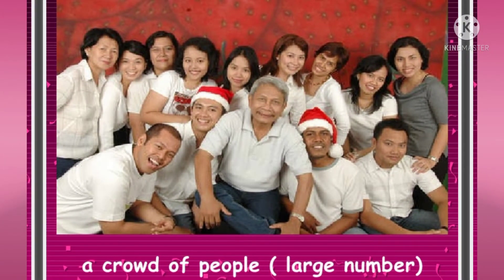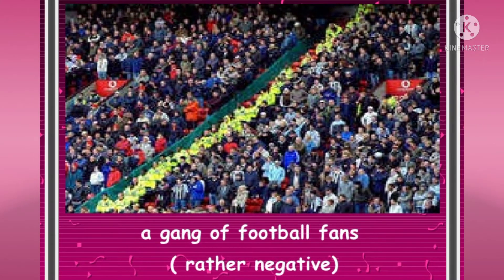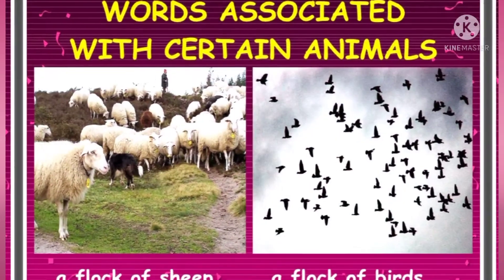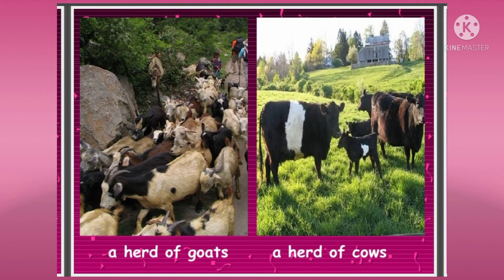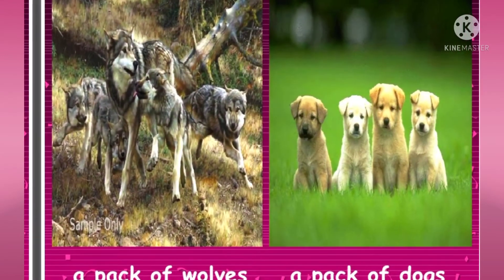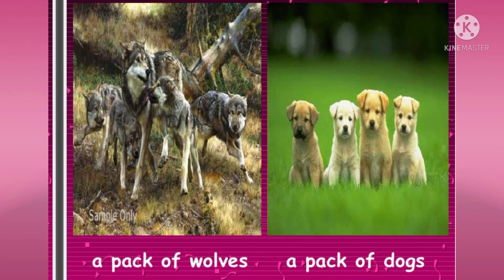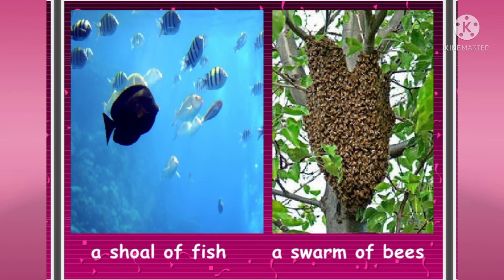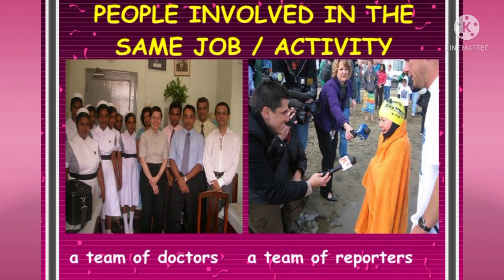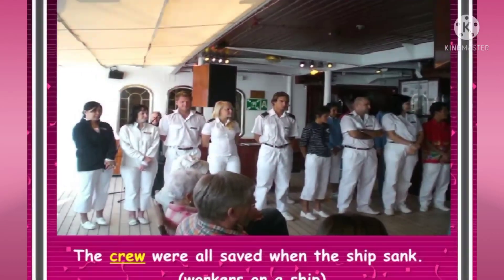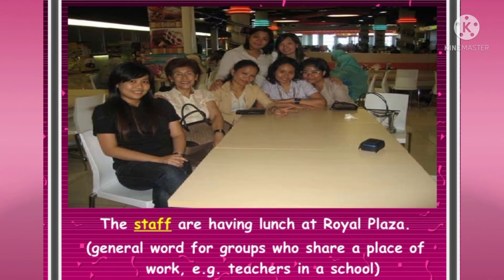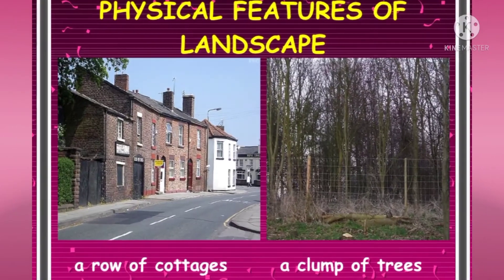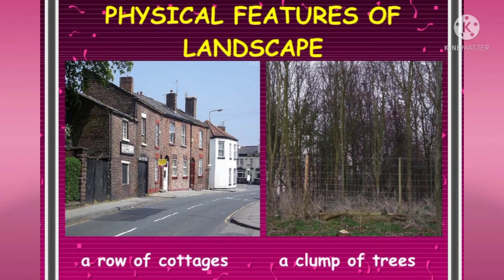Here are some specific examples: a crowd of people, a gang of football fans, a flock of sheep, a flock of birds, a herd of cows, a pack of wolves, a pack of dogs, a shoal of fish, a swarm of bees, a team of doctors, a team of reporters, the crew of a ship, the staff, a row of cottages, a clump of trees. I hope you all understood what collective nouns are.